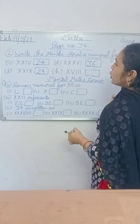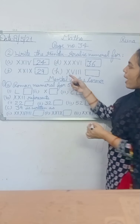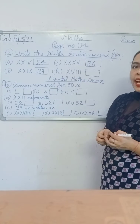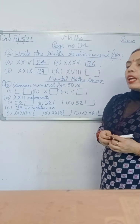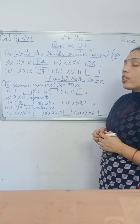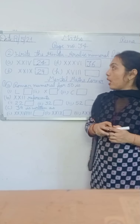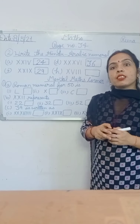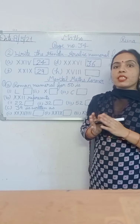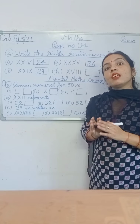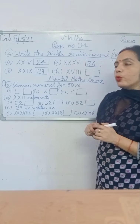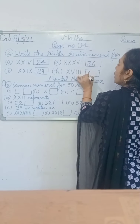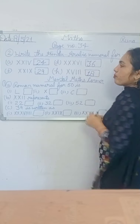Now part H is XVIII. XVIII means X is 10 and VIII means 8. That means 10 plus 8 is 18. Now write 18 here.